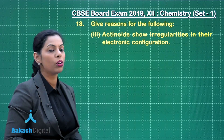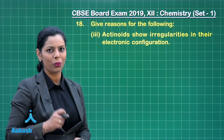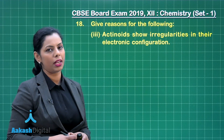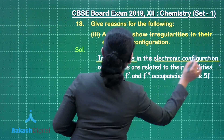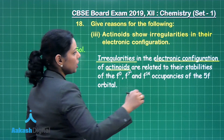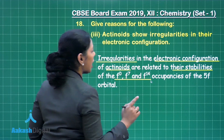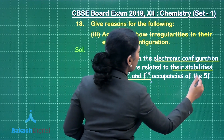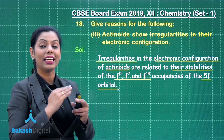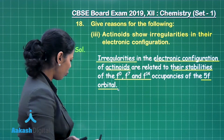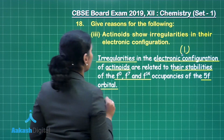The next part is that actinoids show irregularities in their electronic configuration. These are f-block elements, and you have to mention the reason: irregularities in the electronic configurations of actinoids are related to the stable occupancies of f⁰, f⁷, and f¹⁴ of the 5f orbital, and that results in irregularity in electronic configuration. If you write this, you will get one mark for this part of question number 18.